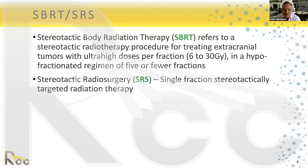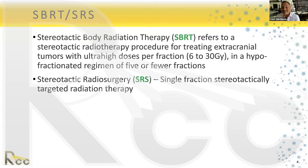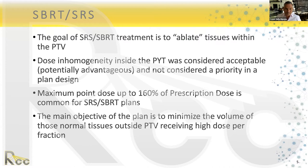Stereotactic body radiation therapy refers to stereotactic radiotherapy for treating extra-cranial tumors with ultra-high doses. They can go from 6 to 30 Gy in a hypofractionated regimen, which is five or fewer fractions. SRS — stereotactic radiosurgery — is basically the same concept but delivered in a single fraction of stereotactically targeted radiation therapy.